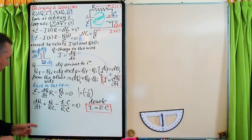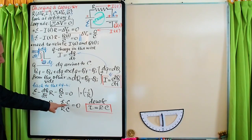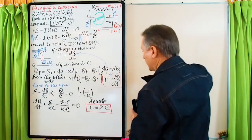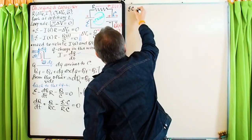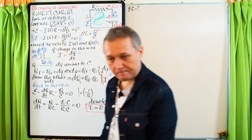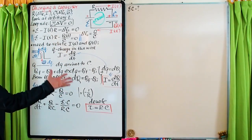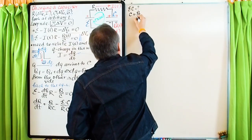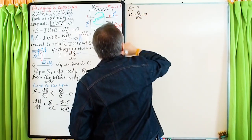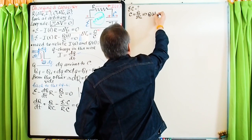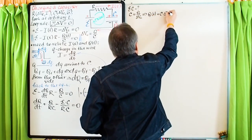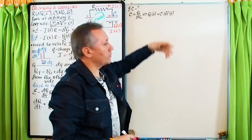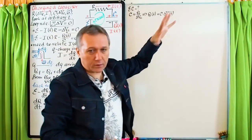What is the meaning of EMF times C? From the definition of capacitance, Q = C · delta_V. When t goes to infinity, the capacitor is fully charged and the potential difference across the capacitor equals EMF. So Q_max = C · EMF. Thus EMF times C is just the maximum amount of charge in the capacitor.